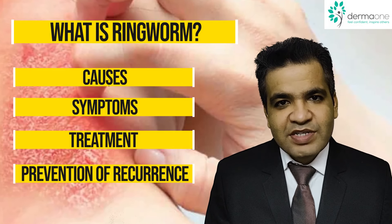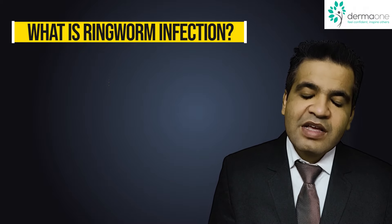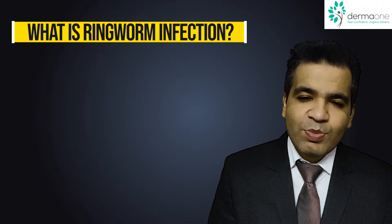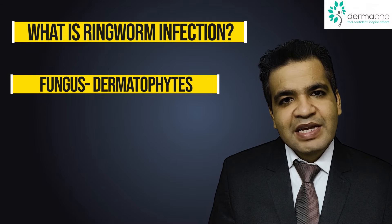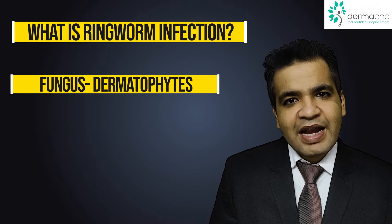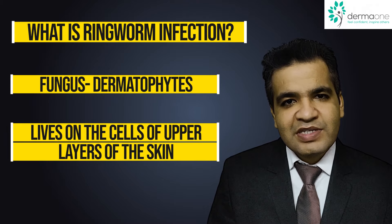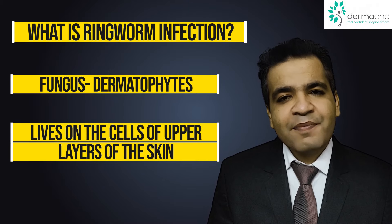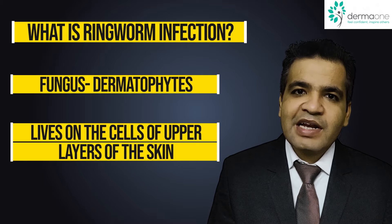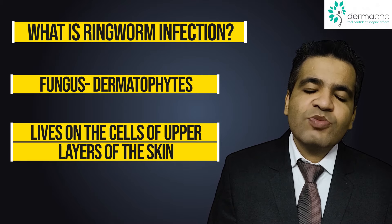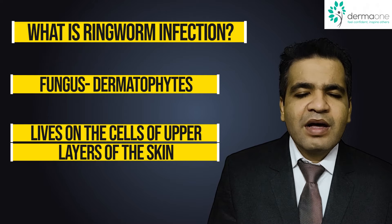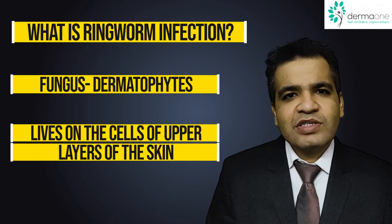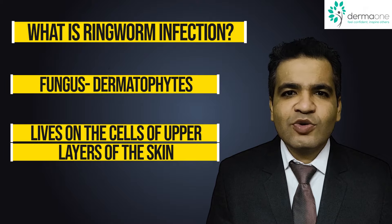Let us first understand how this infection happens. This infection is caused by a group of fungi known as dermatophytes. These fungi live on our skin and try to feed on the most superficial or keratin layer of our skin, and that is how they keep progressing and surviving. This group of dermatophytes primarily consists of three types of fungi, all of which more or less cause similar symptoms in humans.